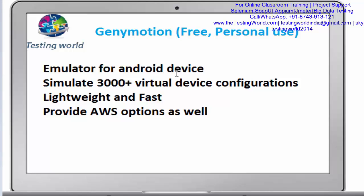In that kind of scenario we can use an emulator. An emulator can be defined as software which provides an environment that behaves as a real device. Whatever real devices we have, we execute our test cases on those. For the rest of the devices, we generate emulators. Genymotion is a software with the help of which we can generate Android emulators.